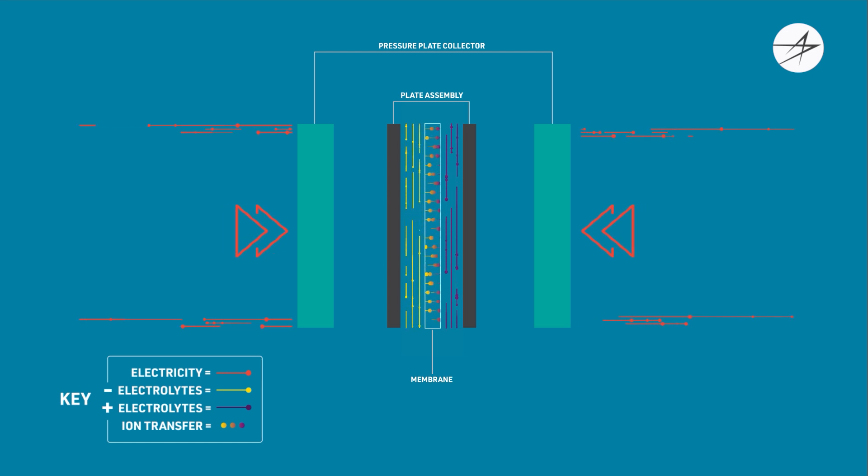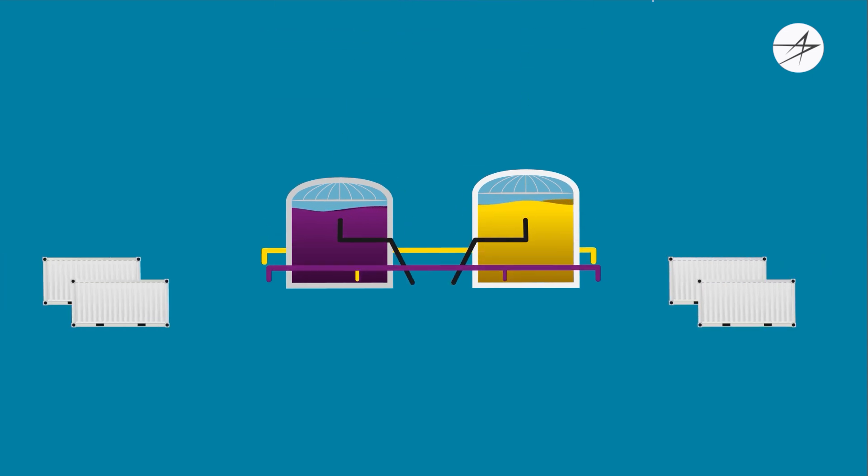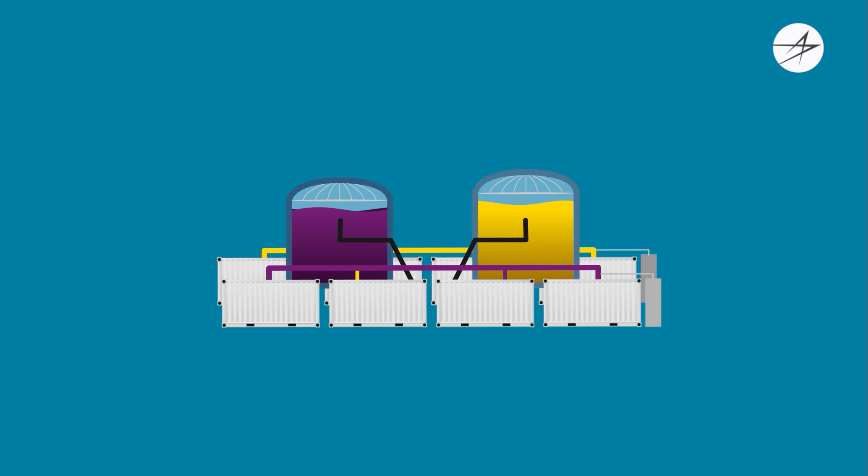What enables GridStar Flow to store large amounts of energy is the third component, the electrolyte storage module. This module is made up of piping, instruments and controls, and two storage tanks.